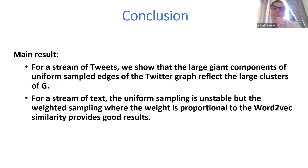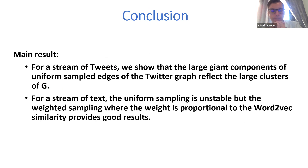In conclusion, for a stream of tweets, the large giant component of uniformly sampled edges of the Twitter graph reflects the large clusters of G. For a stream of text, uniform sampling is unstable, but weighted sampling where the weight is proportional to the Word2Vec similarity provides good results. We can detect clusters, observe how they evolve, and the giant component helps classify text — all texts discussing the same subject will have close giant components.